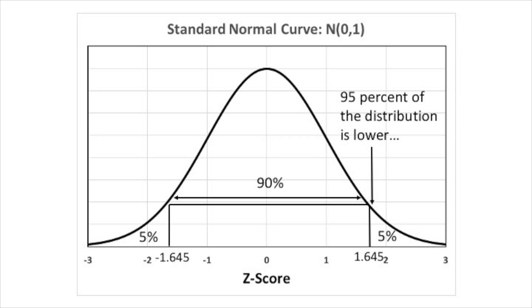Going back to the standard normal curve, we can replace the question marks with actual z-values. The value of 1.645 corresponds with the top 5% of the distribution, and the bottom 5% has a z-score of −1.645, because the standard normal curve is symmetric.